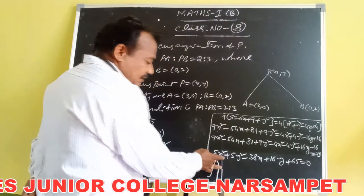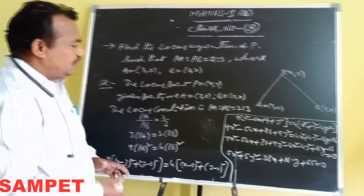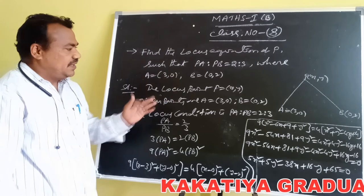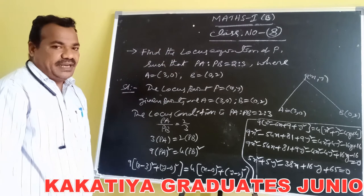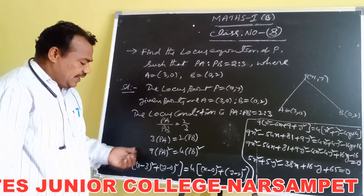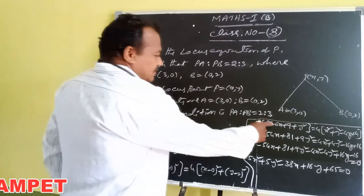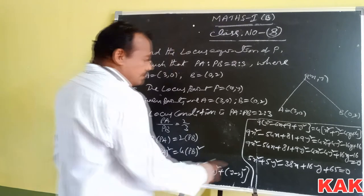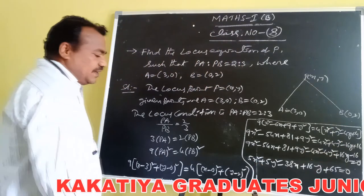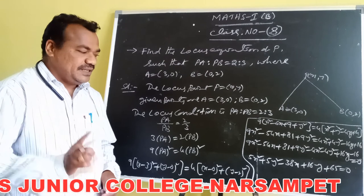This is the required locus equation of P such that the ratio of the distances from P to A and P to B is 2 is to 3. To summarize: write the locus condition, apply squaring on both sides to get 9 of PA squared equals 4 of PB squared. Substitute the distance formula and simplify. The locus equation of P is 5X squared plus 5Y squared minus 38X plus 16Y plus 65 equals 0.